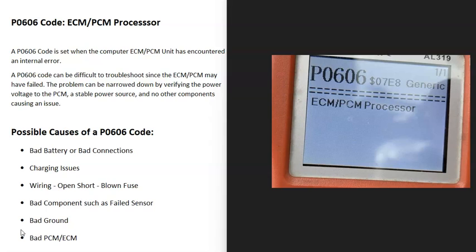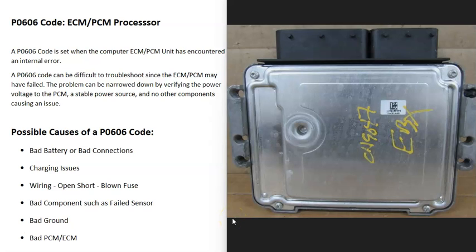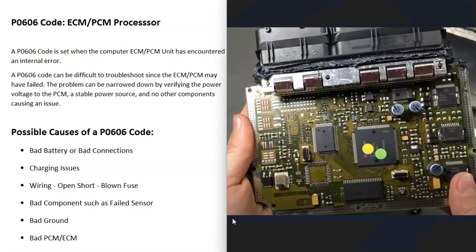Today I'm talking about a P0606 code — what it is and how you go about fixing it. The P0606 code is an ECM/PCM processor fault. As most people know, there are computers built into modern vehicles: there could be an engine control module (ECM), a powertrain control module (PCM), transmission control modules, or ABS control modules. When you get a P0606 code, the main computer module is having an internal error.